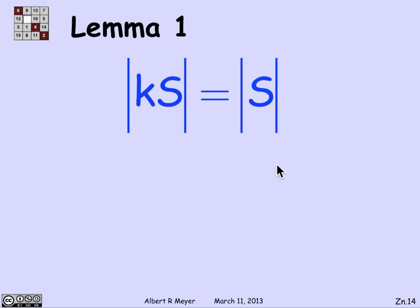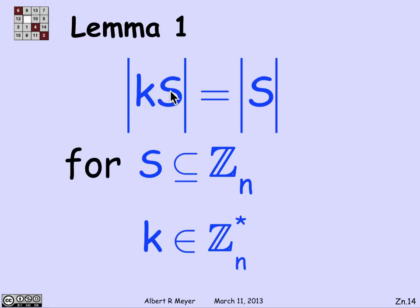So the first remark is that if I have any subset S of elements in Z_n, I don't care whether they're relatively prime to n or not, if I multiply each of them by k, this notation for k times S means that I'm taking the set of elements that are of the form k times an element of S over all the elements of S. So kS, which is this set of multiples of elements of S by k, has exactly the same size as S.